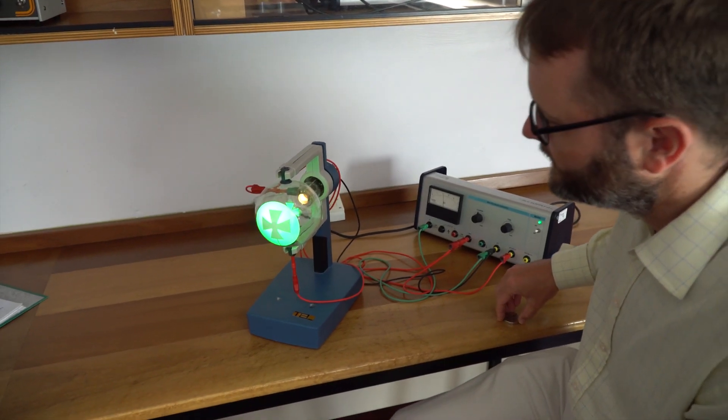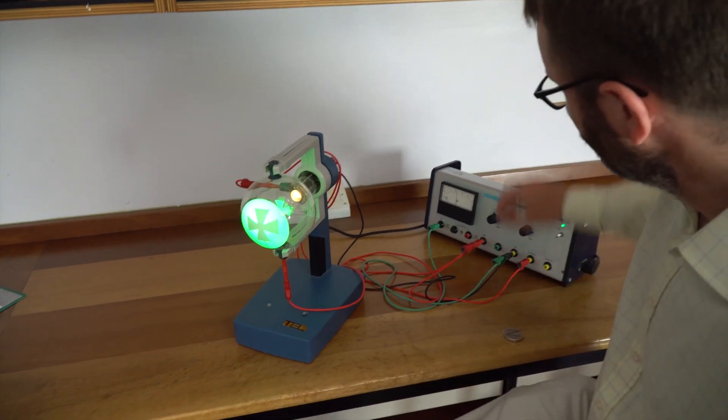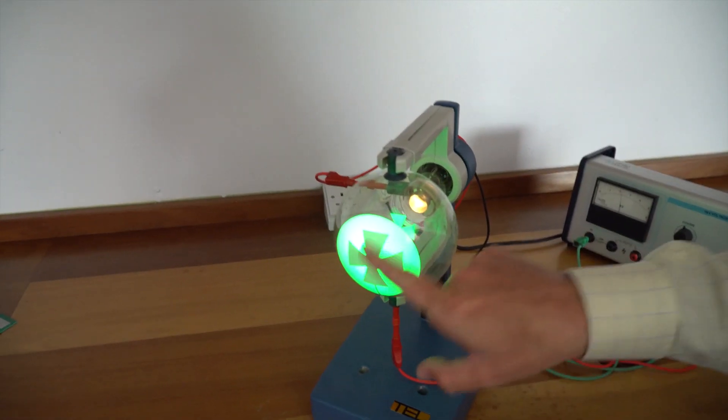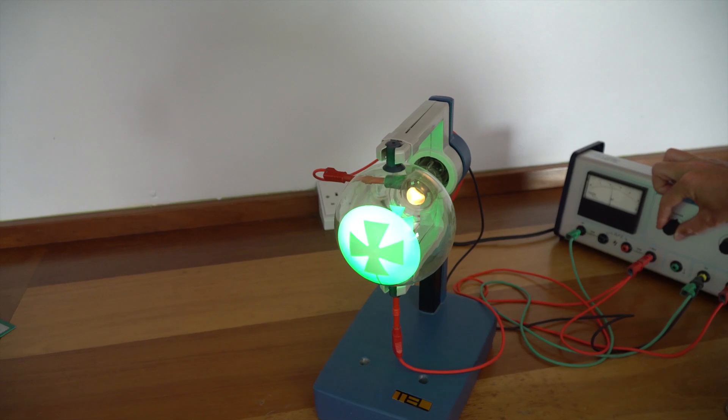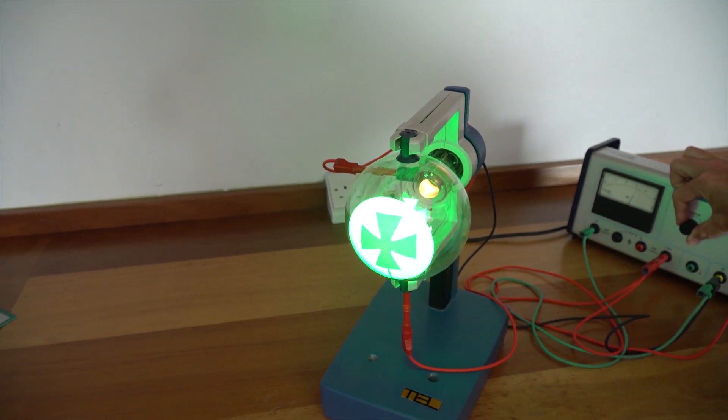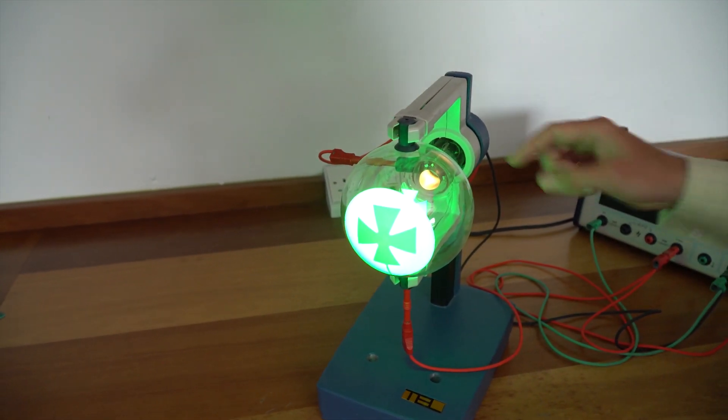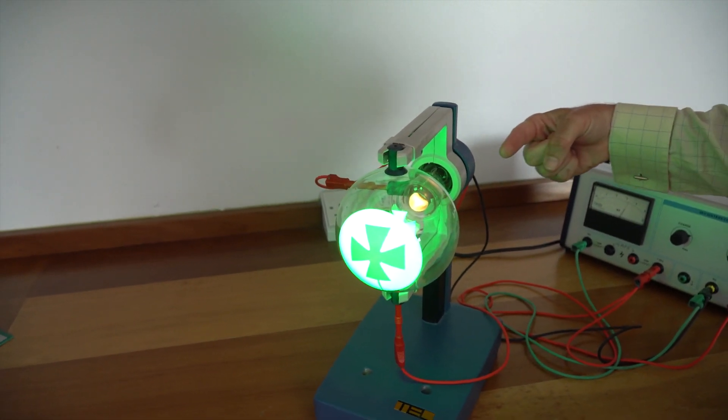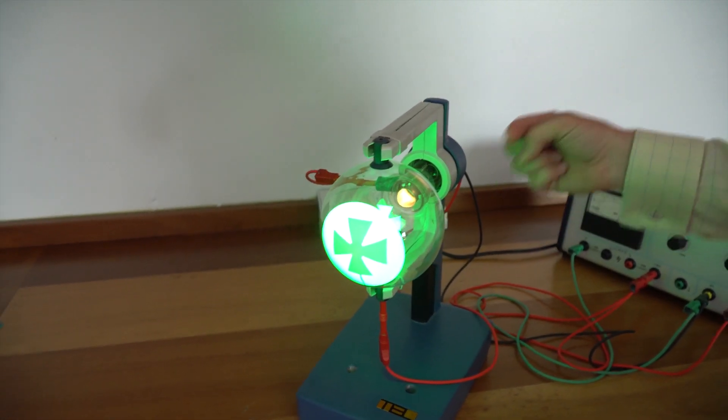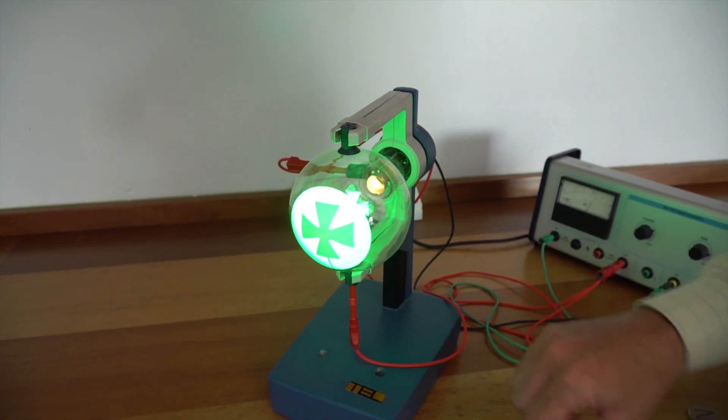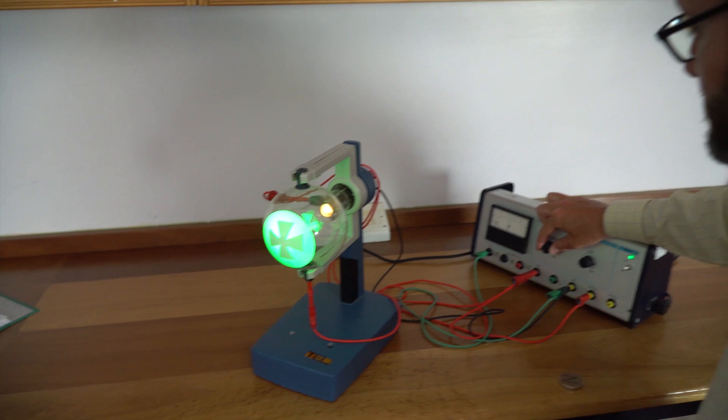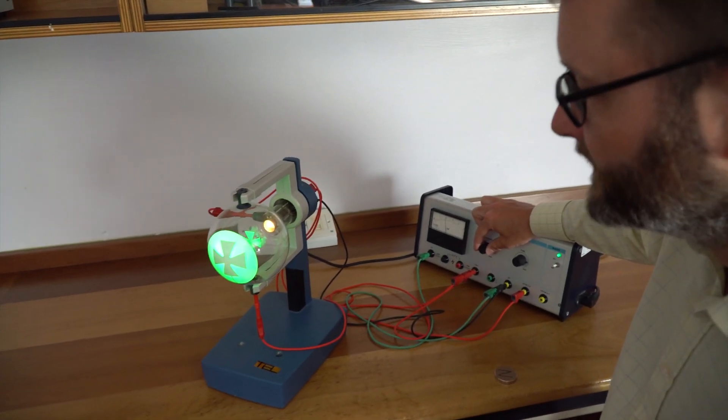At this point there's a few things you can do. First of all, you can just really simply turn up the accelerating PD and that doesn't change anything about the shape on the screen. But if I go up to three kilovolts it becomes noticeably brighter. That's really simply just because the same amount of electrons are being accelerated more. They're gaining more kinetic energy so when they hit the phosphor they dump more of that into light energy, so it becomes brighter.